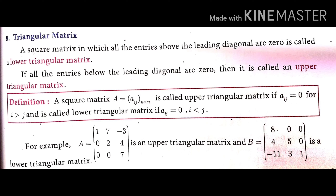The ninth type is the triangular matrix. A square matrix in which all entries above the leading diagonal are zero is called a lower triangular matrix. If all entries below the leading diagonal are zero, it is called an upper triangular matrix. So: above the diagonal → lower triangular; below the diagonal → upper triangular.